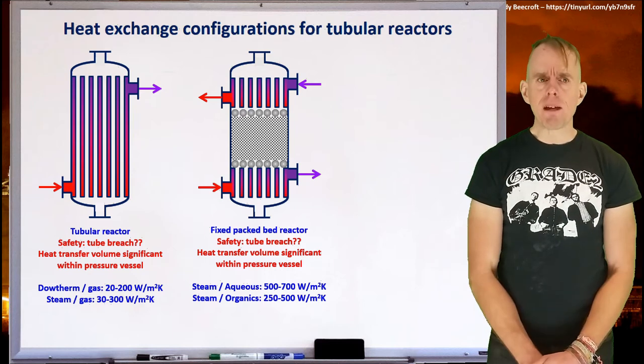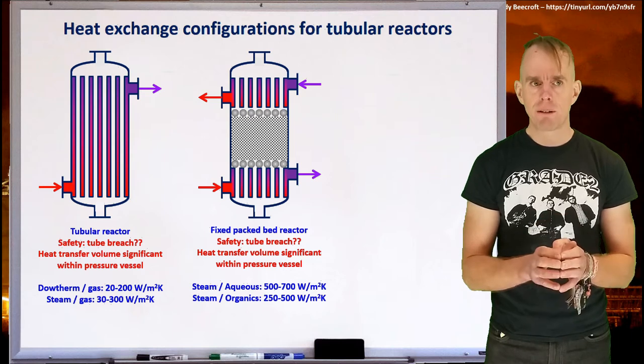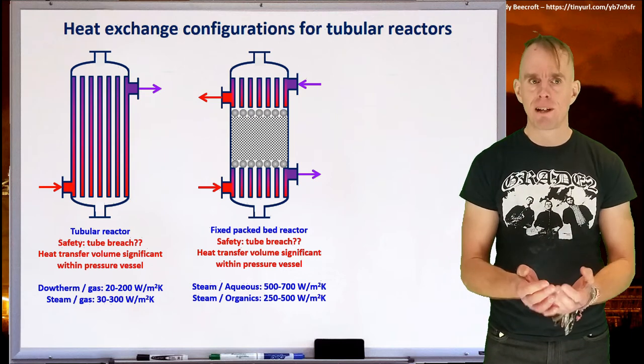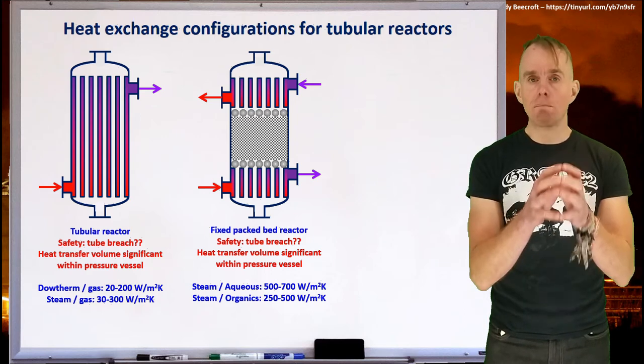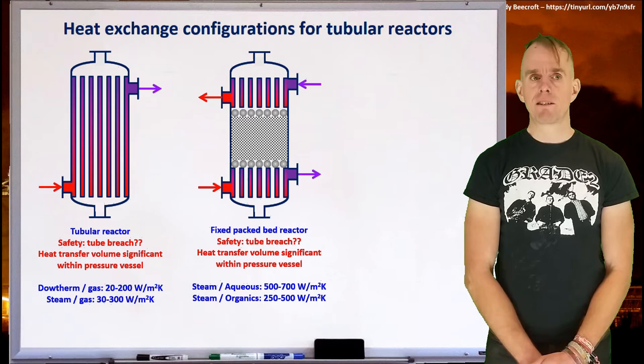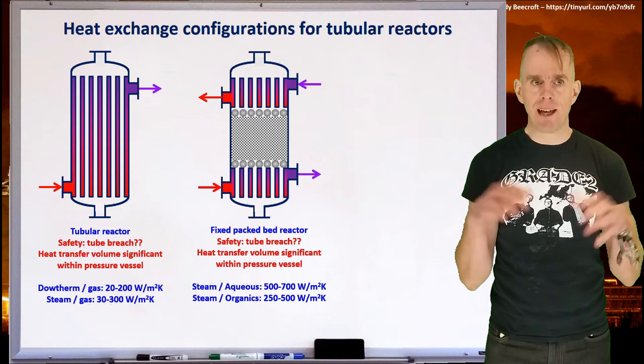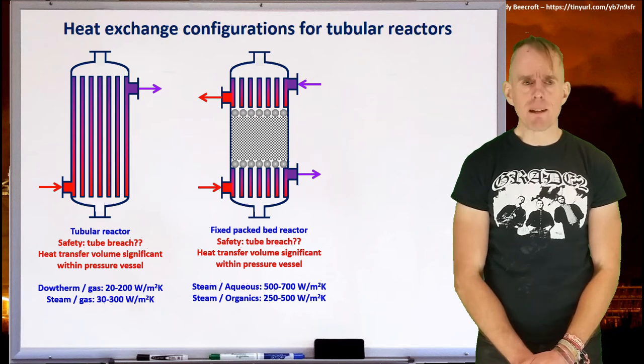And so the second diagram is kind of similar to that. What we have is a tube bundle within our pressure vessel. But this time, rather than taking the effluent of the reactor, it's taking an external utility. And then we have a second tube bundle that will be removing reactant exotherm. And again, that's illustrated with an external utility providing the heat transfer. So again, first thing to think about here is safety. We're using an external utility. What happens if you get a tube breach and you get the reacting mixture contacting the utility or the utility contacting the catalyst?